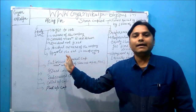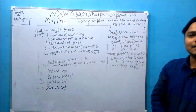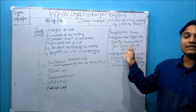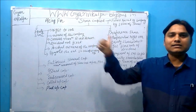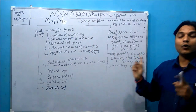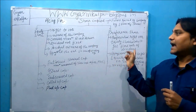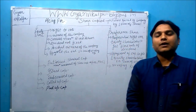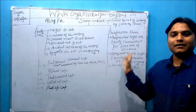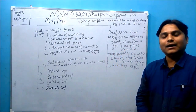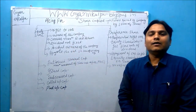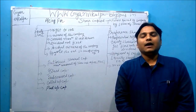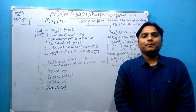In case of preference shares, preference shareholders get the preferential right to receive a fixed dividend over equity shareholders. They are not the owners of the company and do not have voting rights, whereas equity shareholders do have voting rights. In case of winding up, preference shareholders get repayment of their capital before equity shareholders, but after paying off liabilities such as debentures and other liabilities.